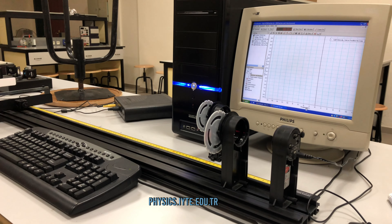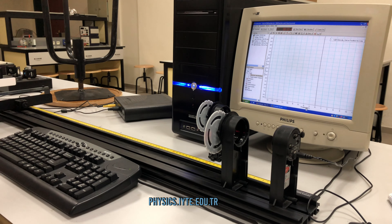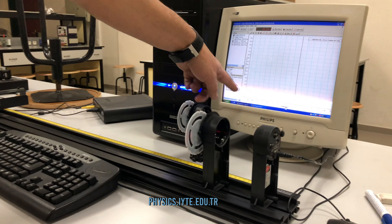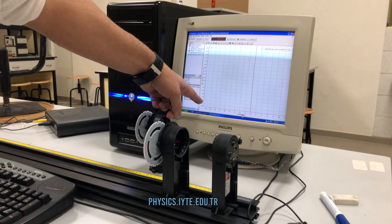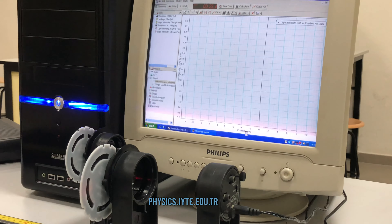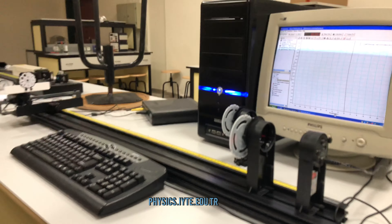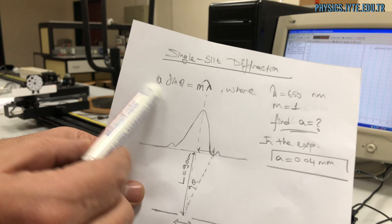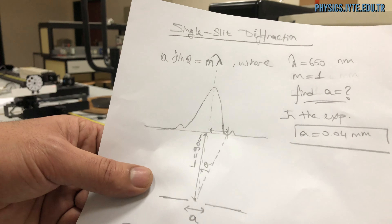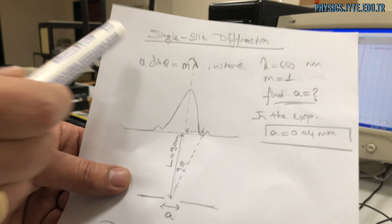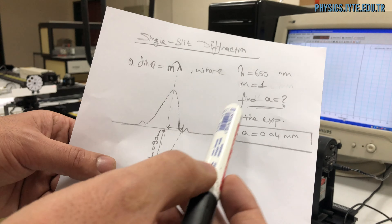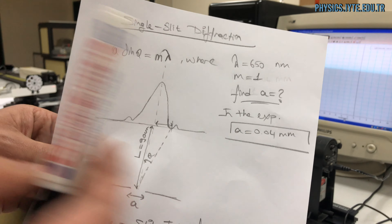To do this experiment, we have to move the light sensor. And finally, we get a graph, which is the light intensity as a function of position. And you can find the values of A, as you see here — the values of A which we have to find. The experimental value of A is equal to this value.